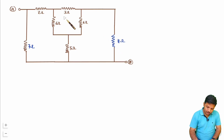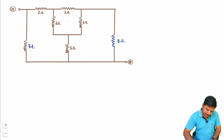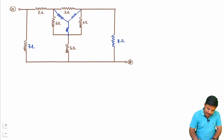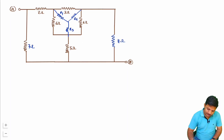If you observe this connection, it is forming a delta. This is forming delta. All I can do is convert that into star for further simplification. For the star conversion, I am connecting the star equivalent here. To calculate the star equivalent resistance, let us say I am having R1, R2, and R3. Let us find the value of R1.